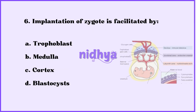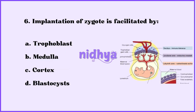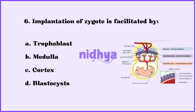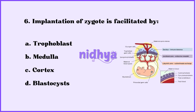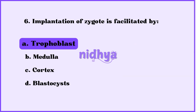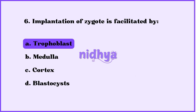Sixth question: Implantation of the zygote is facilitated by — trophoblast, medulla, cortex, or blastocyst? The answer is trophoblast.